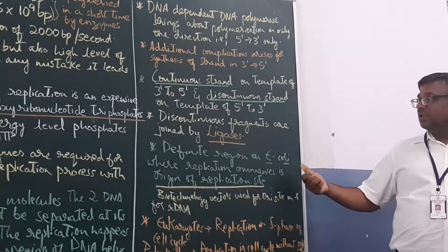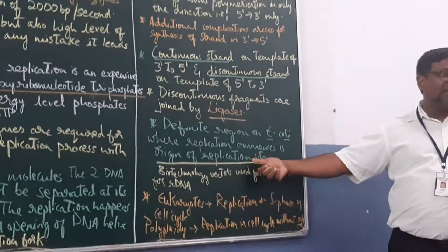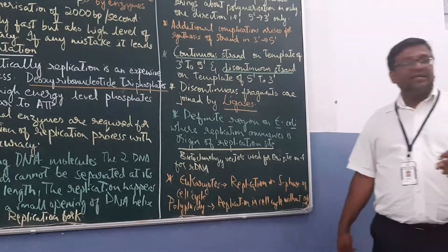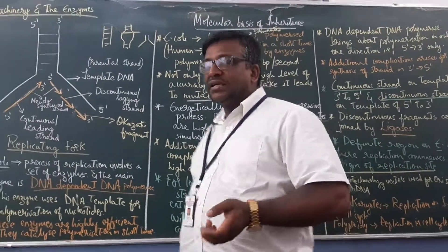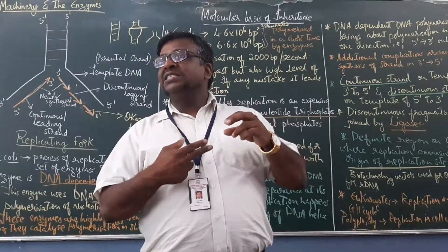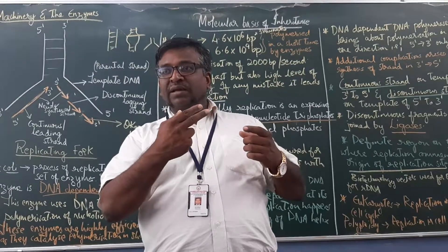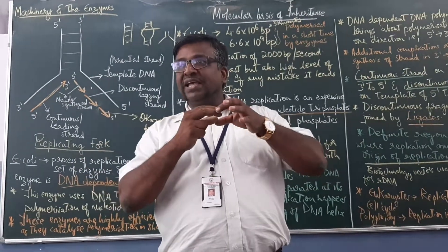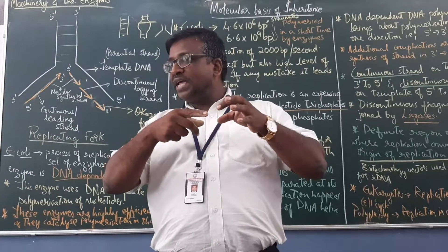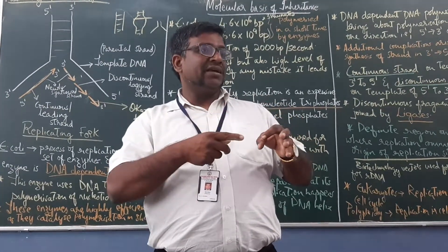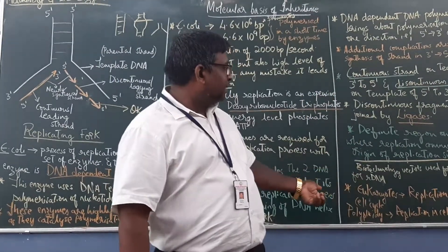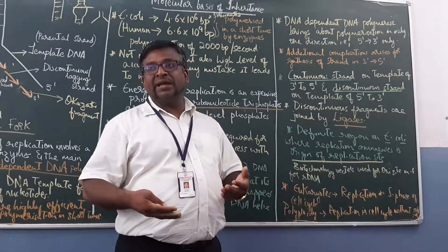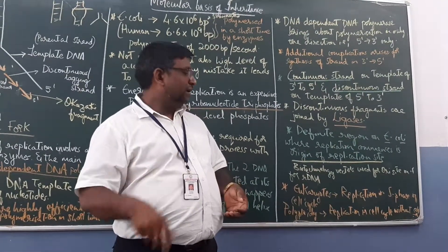The concept of the ori site is also utilized in biotechnology. In recombinant DNA technology, vectors such as PBR322 are used because they contain an origin of replication site. The desired gene is inserted into the vector, and replication of the new DNA fragment commences from this ori site, allowing the desired DNA to be multiplied.